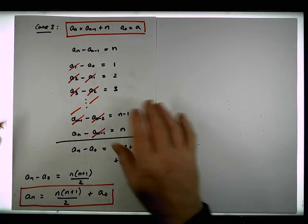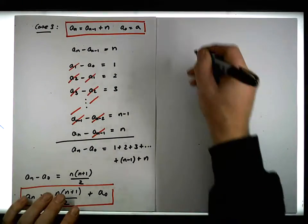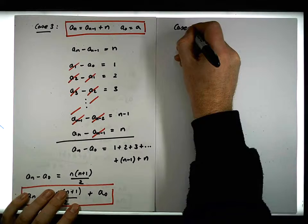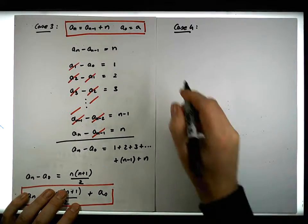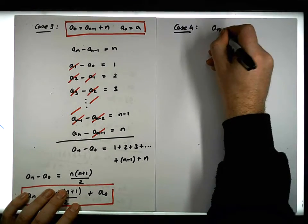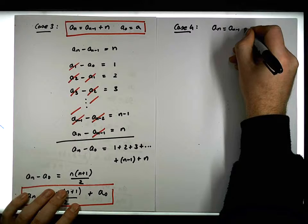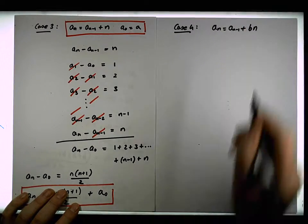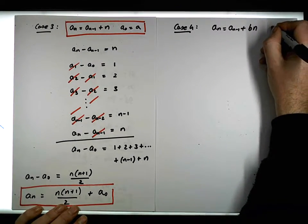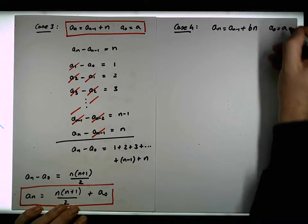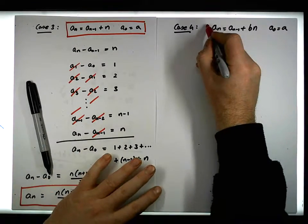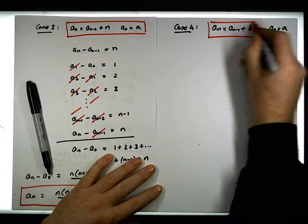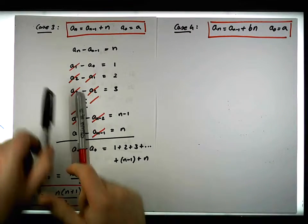Let's say we have case 4. Now what we have is an is equal to an minus 1 plus some constant times n. We're making it a little more complicated. We're given some base case a0 is equal to some value a, and what we'd like to do is use the method of differences to find a closed form solution to this particular recurrence.